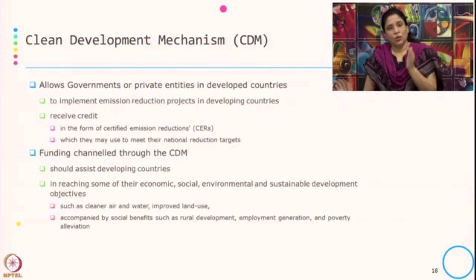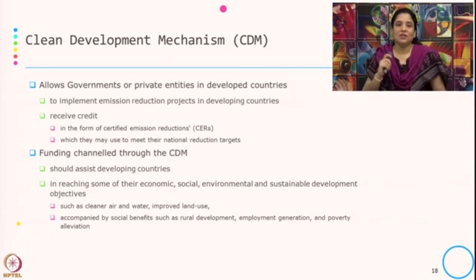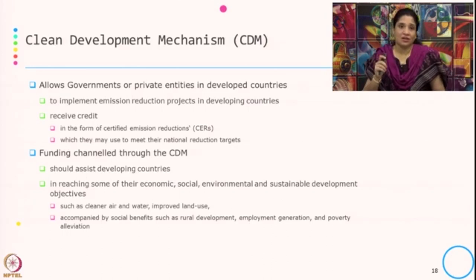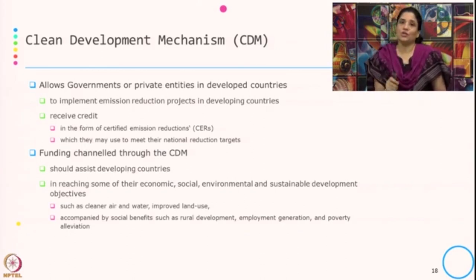What happens in this Clean Development Mechanism? It allows the government and private entities in the developed country to implement emission reduction projects in developing countries, and receive credit in the form of Certified Emission Reductions — that is CERs — which they may use to meet their national reduction targets. Developed countries do this because the cost of reduction or the cost of abatement is low in the developing country.